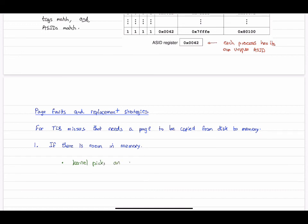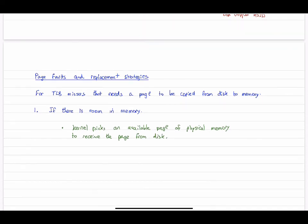First, let's say that there is room in memory. We've got pages not being used. So that's the easy situation. The operating system kernel then picks an available page in physical memory and loads that page into memory from the disk.